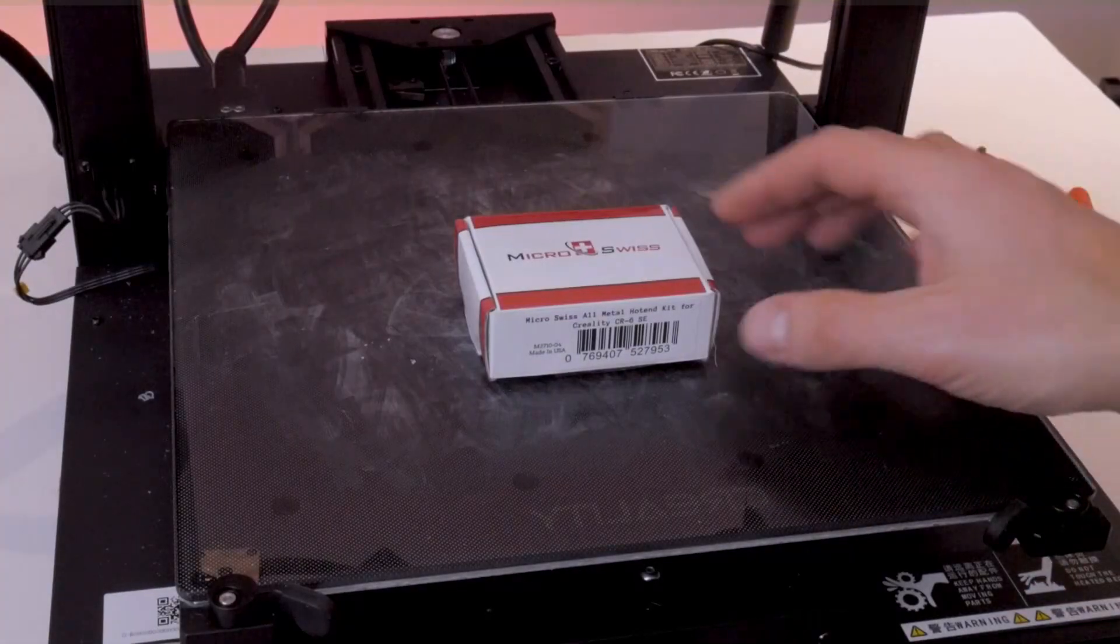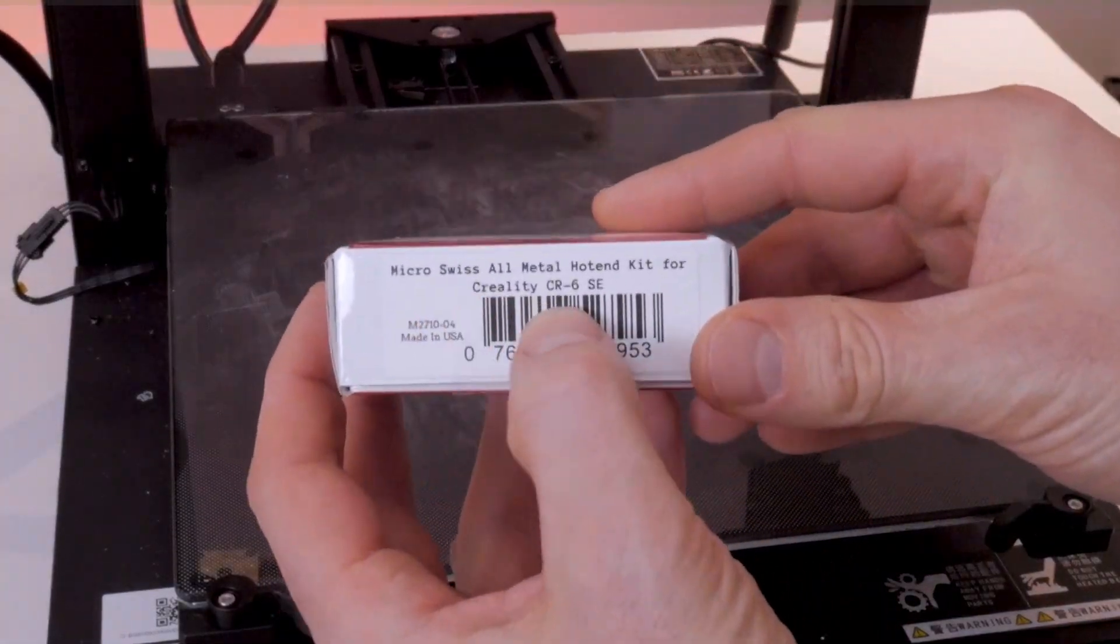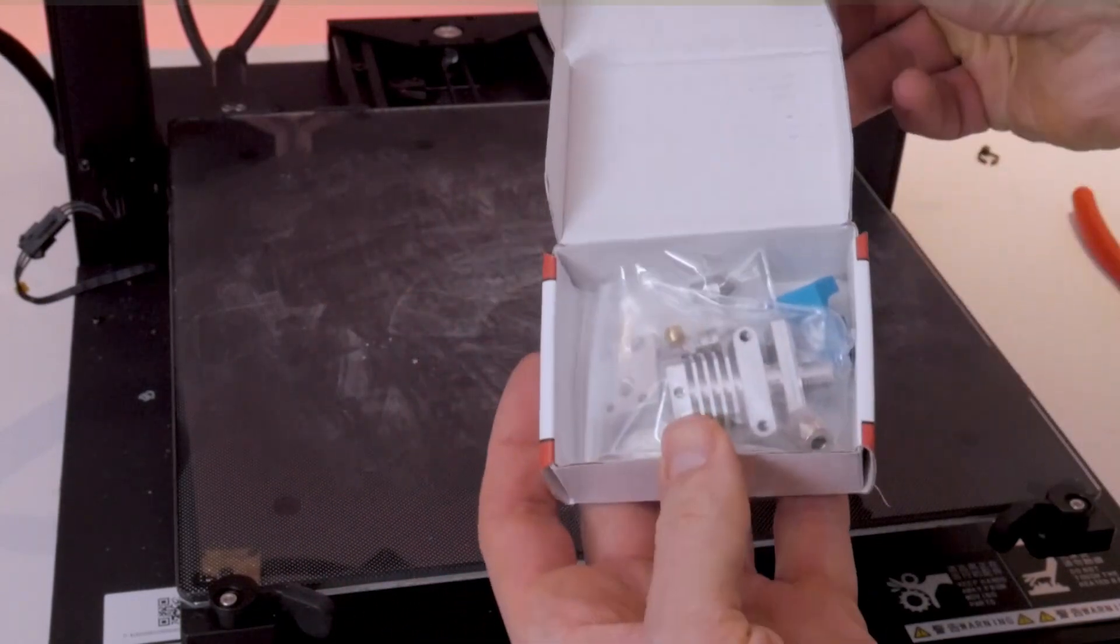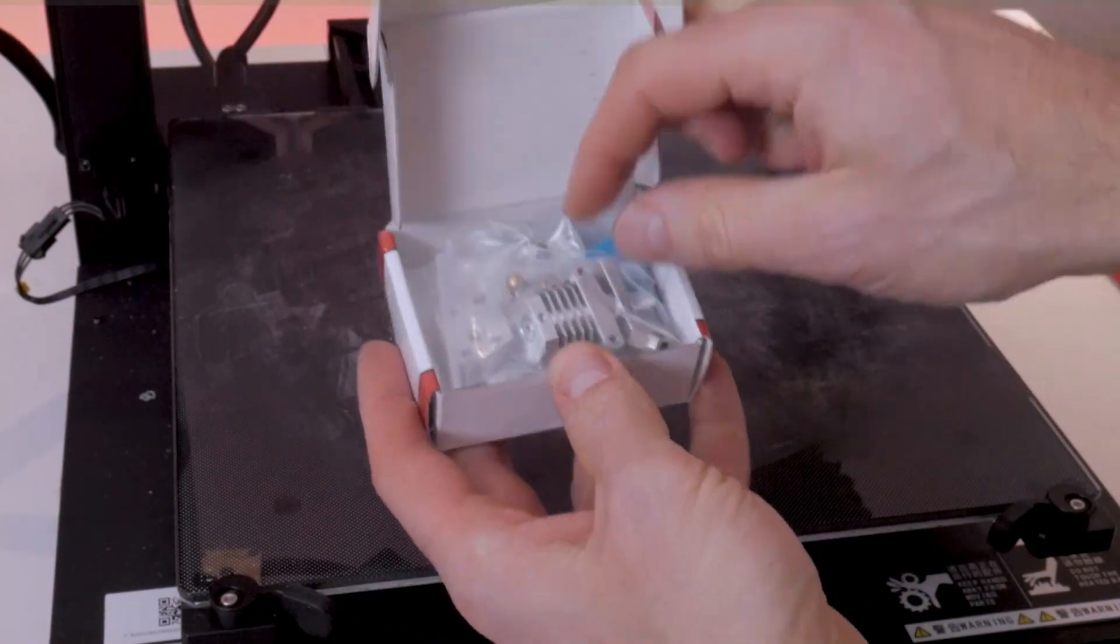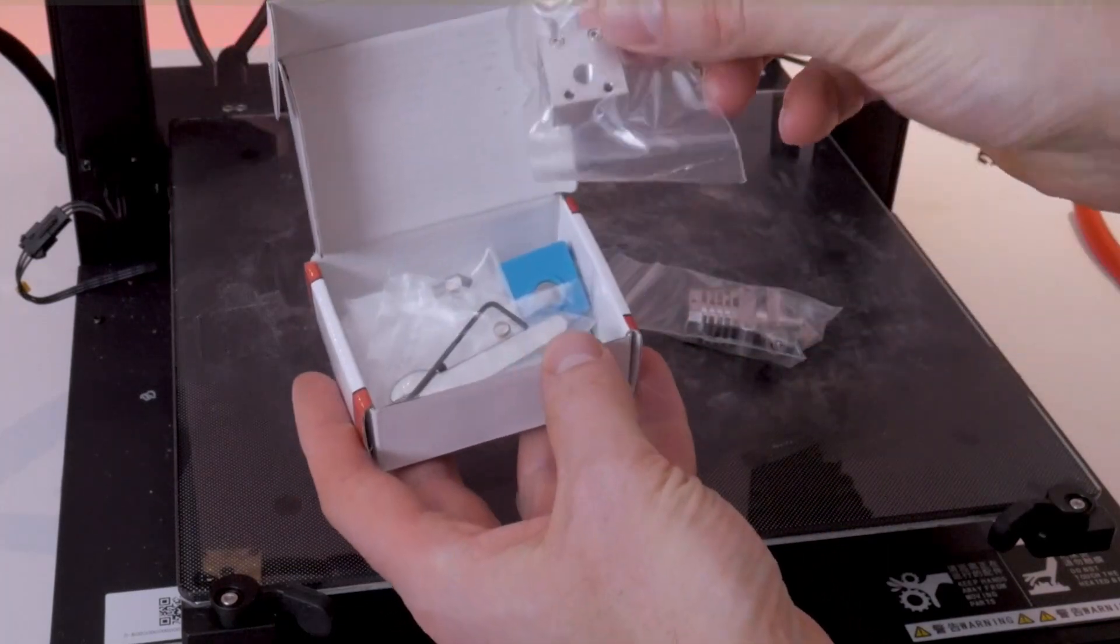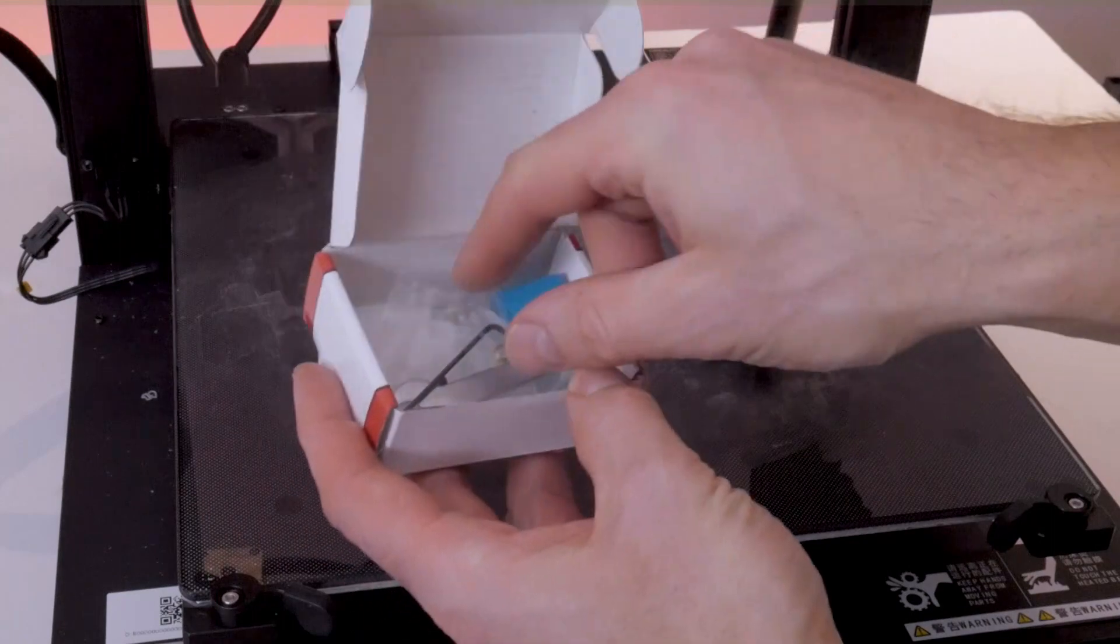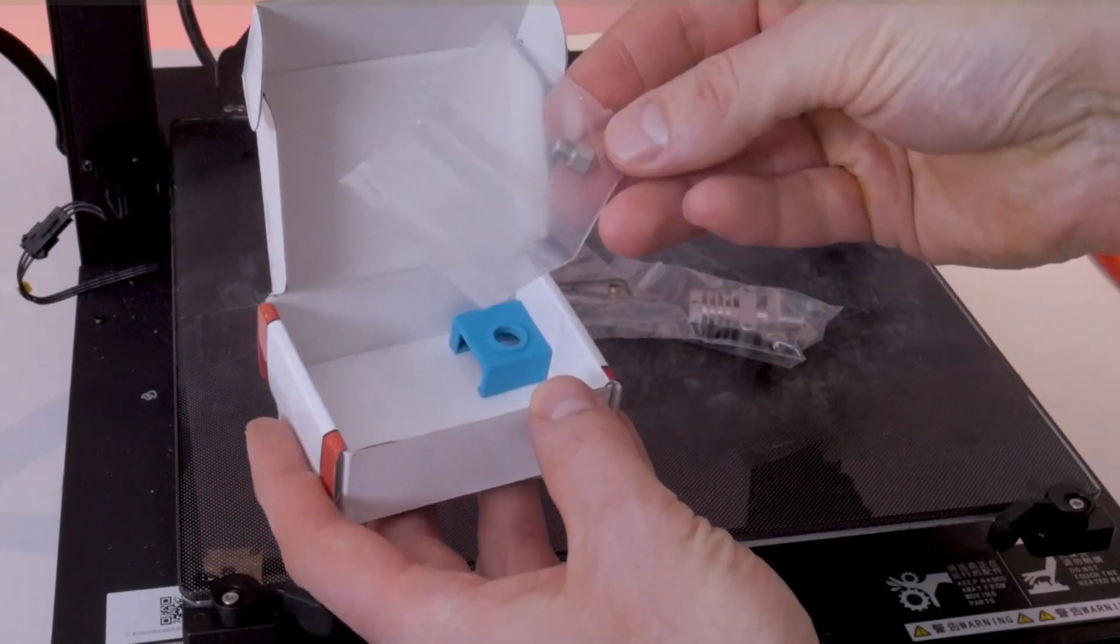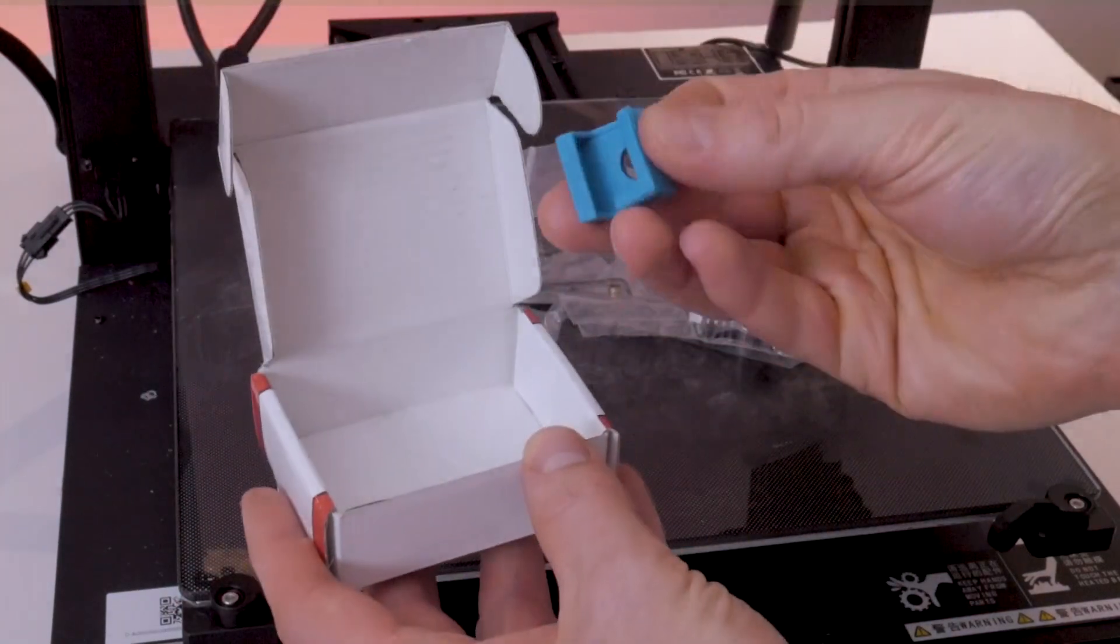Now we can unbox the Micro Swiss bits. We're using an all-metal hot end kit for the CR6 SE because right now there is no kit specifically available for the CR10 Smart. But it turns out the CR10 Smart and the CR6 SE are very similar printers, so not surprisingly there are a lot of interchangeable parts, the hot end being one of them.